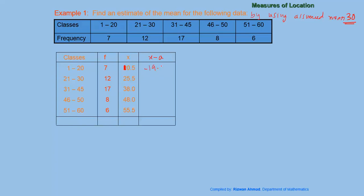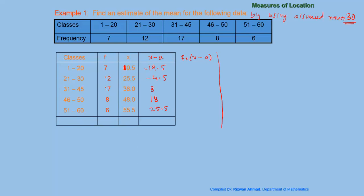For the first class, x minus A is 10.5 minus 30, which is minus 19.5. The second class gives 25.5 minus 30, which is minus 4.5. Then the remaining values are 8, 4, 18, and 25.5. After completing the x minus A column, we make another column multiplying f by x minus A. For the first class, 7 times minus 19.5 equals minus 136.5.